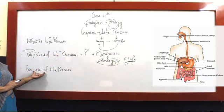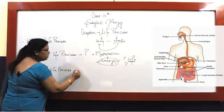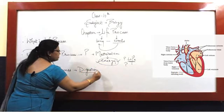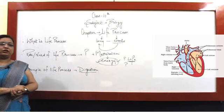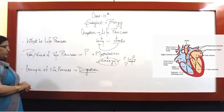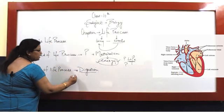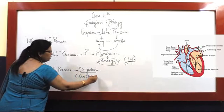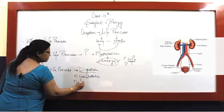For example, digestion. Dikh raha hai aapko screen par. Digestive system. Hum khane ko khayenge, digestive system ke through digest karenge. Second, circulatory system. Again heart is visible to you. Third, excretory system.